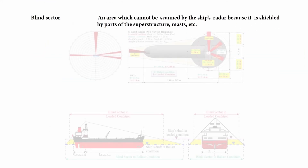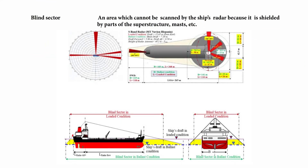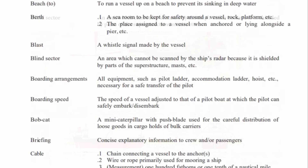Blind sector. A blind sector is an area which cannot be scanned by the ship's radar, because it is shielded by parts of the superstructure, masts, etc.